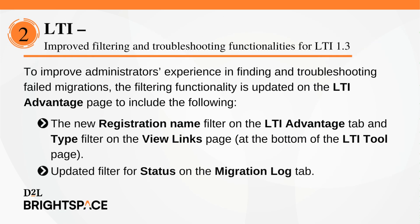To improve administrators' experience in finding and troubleshooting failed migrations, the filtering functionality is updated on the LTI Advantage page to include: a new registration name filter on the LTI Advantage tab, a type filter on the view links page located at the bottom of the LTI tool page, and an updated filter for status on the migration log tab. The new filter on the LTI Advantage tab helps users with large numbers of deployments, as administrators can select a registration and filter the results by their registration names.